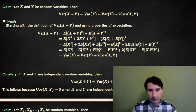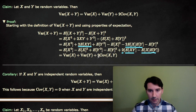Finally, we take the 2·E of XY and the 2·E of X·E of Y and rewrite this. Pulling the 2's out, we have 2 times the quantity E of XY minus E of X·E of Y, which is 2 times the covariance of X and Y.